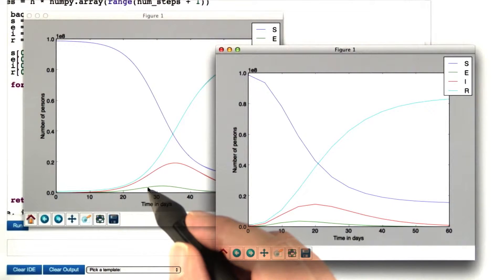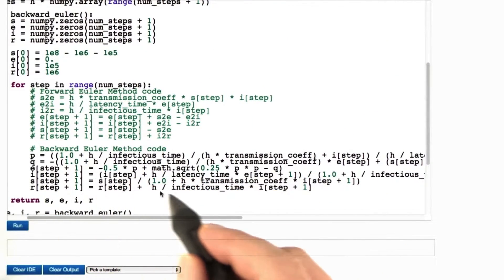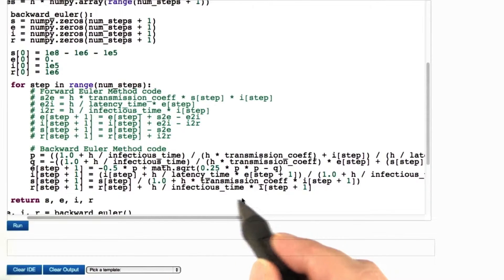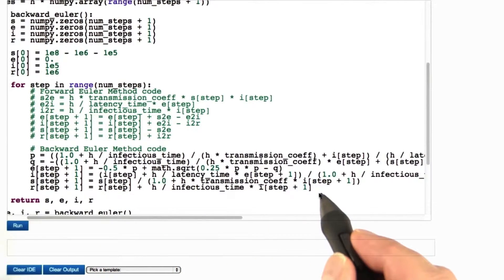We already saw that the Euler method with step sizes of two or more. But there's a price to pay for the stability of the backward Euler method. The code gets really complex as opposed to the code of the forward Euler method.